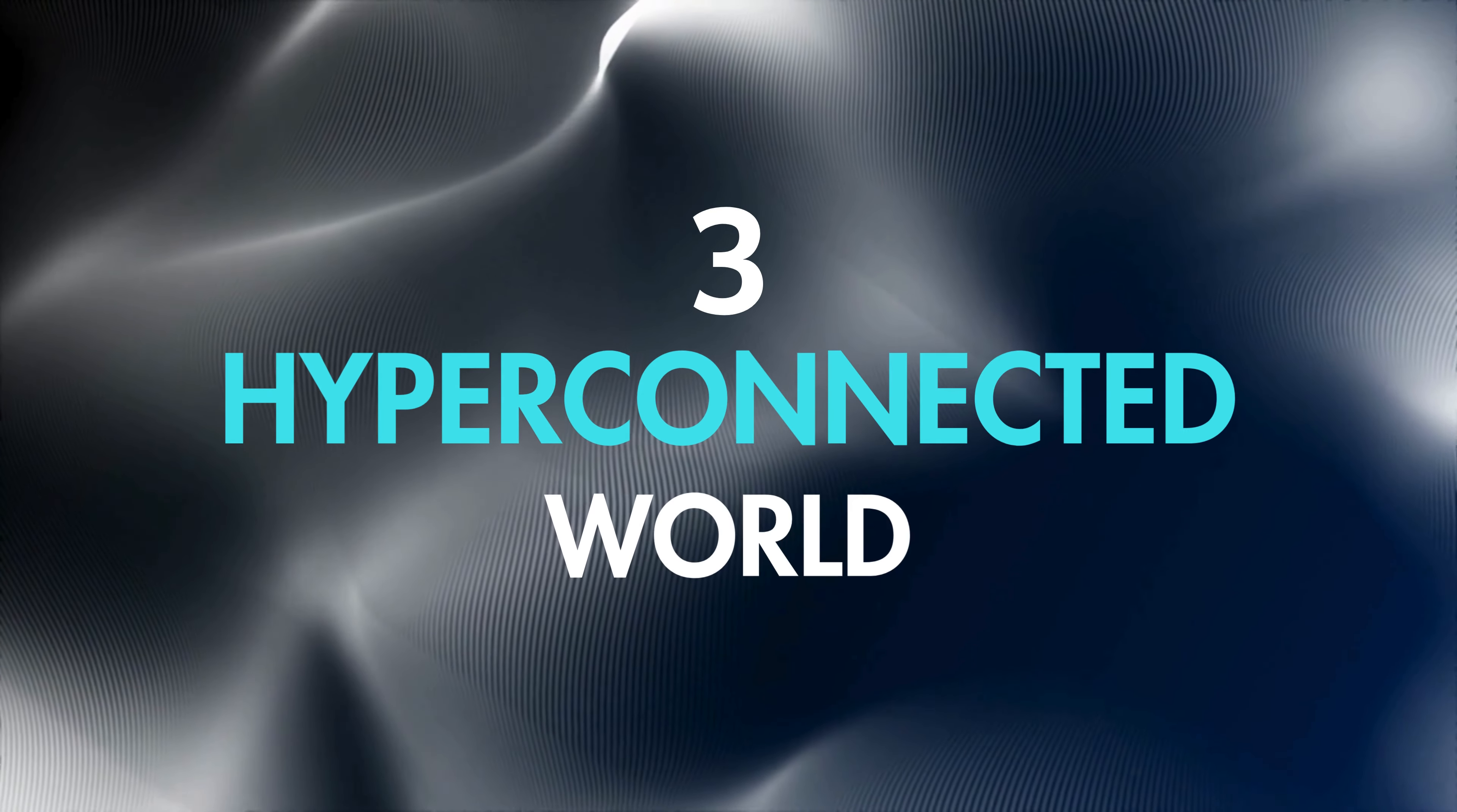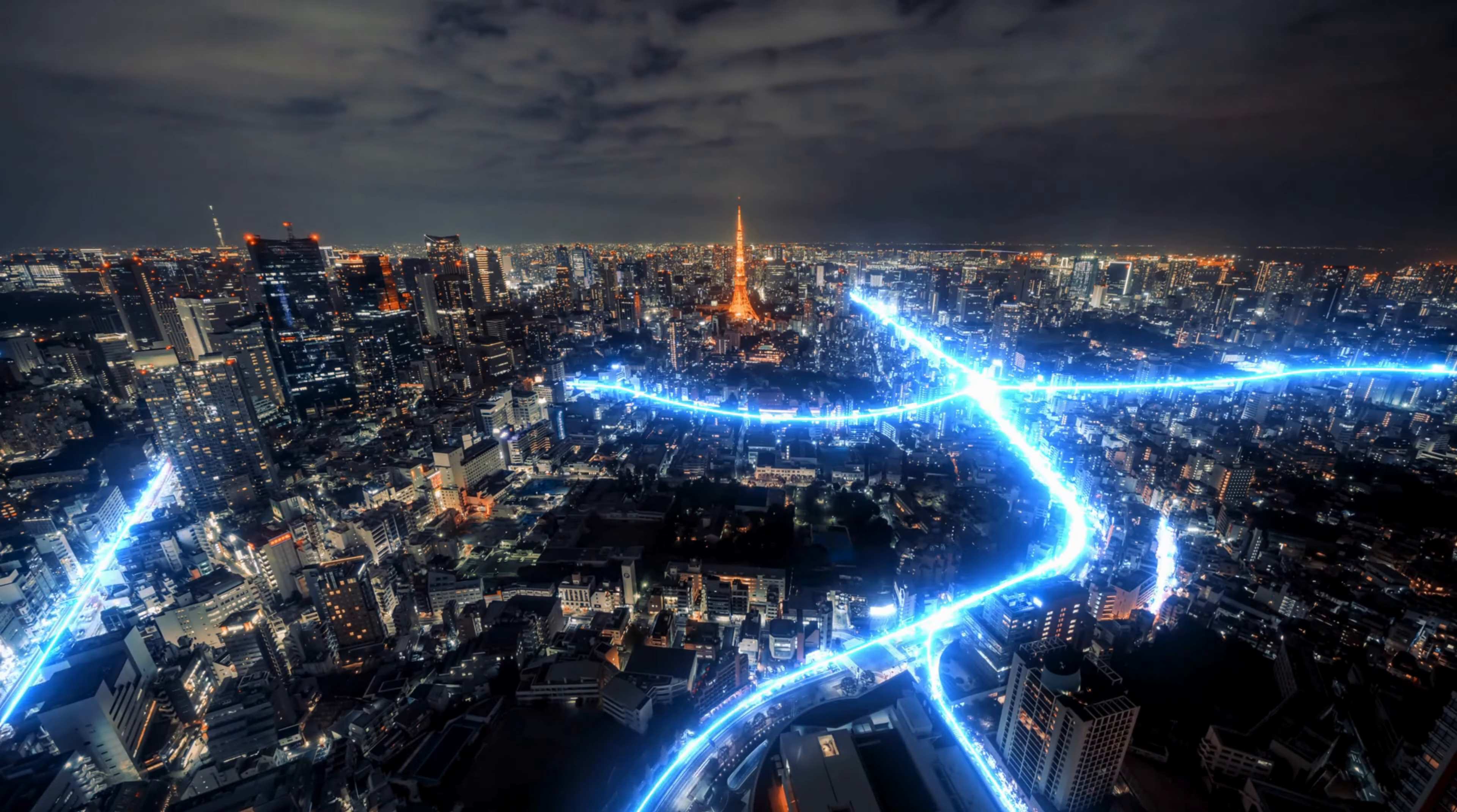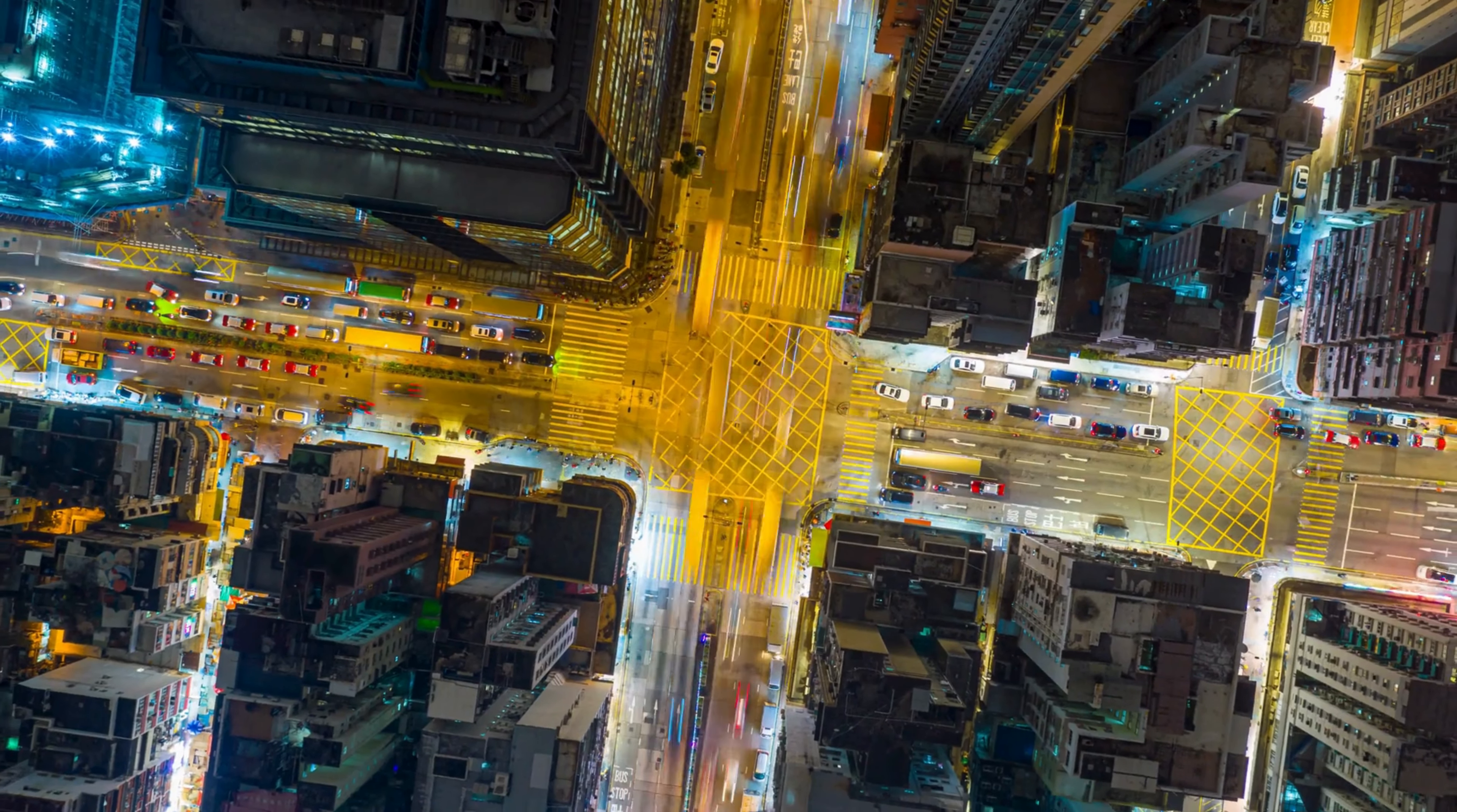Number 3: A hyper-connected world. We'll live in a hyper-connected world. AI will link every device, optimizing traffic, energy usage, and healthcare. Picture a smart city where AI manages traffic lights, buses, and delivery vehicles for maximum efficiency. Imagine AI reducing traffic jams by adjusting traffic lights in real time based on current traffic flow.